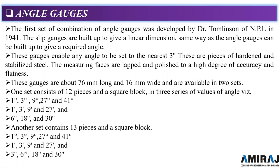These gauges enable any angle to be set to the nearest about 3 seconds. So we have seen the minute, degree, minute and then second up to 3 seconds, which means very small amount of angle can be measured. And these are pieces of hardened and stabilized steel. The measuring faces are lapped and polished to high degree of accuracy and flatness. These gauges are about 76 mm long and 16 mm wide and are available in two sets.